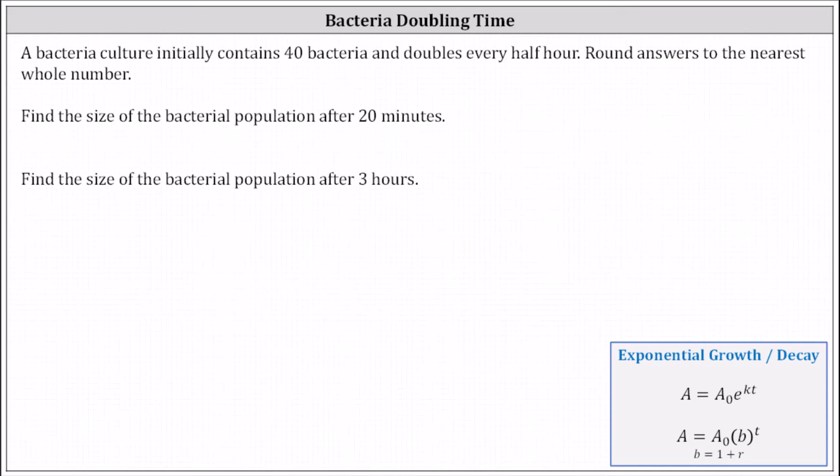To begin, we need the time to be in the same units. Notice the doubling time is half an hour, and we want the population after 20 minutes and three hours. Let's use time in minutes, which means from the given information we will use time t equals 30 minutes. To find an equation that models the situation, we can use an exponential equation in base e or base b, where base b is one plus the growth rate.